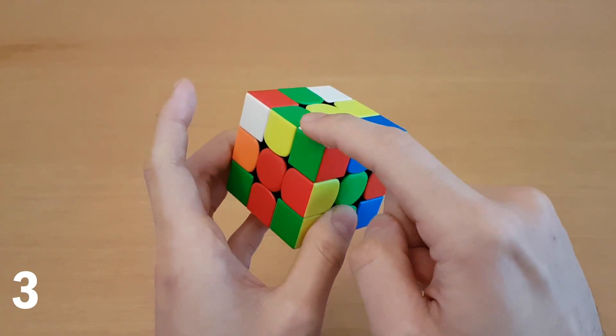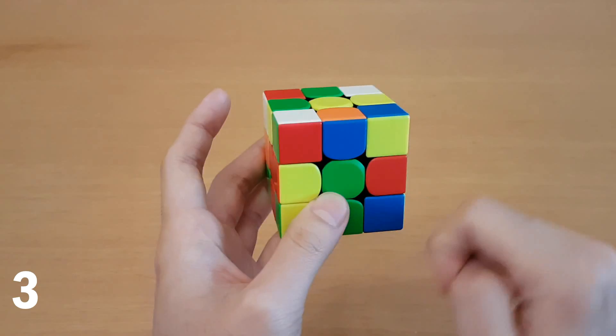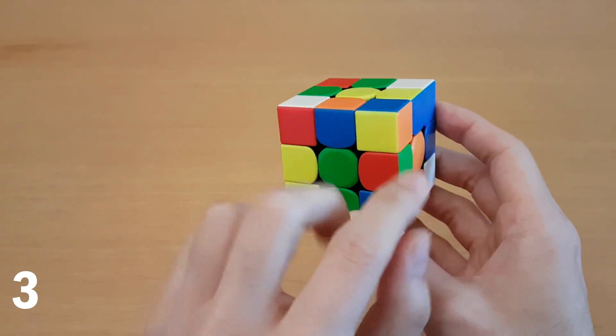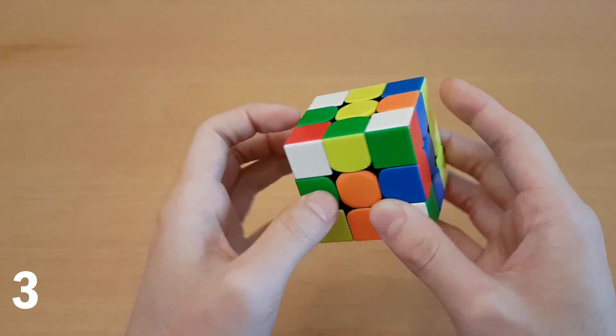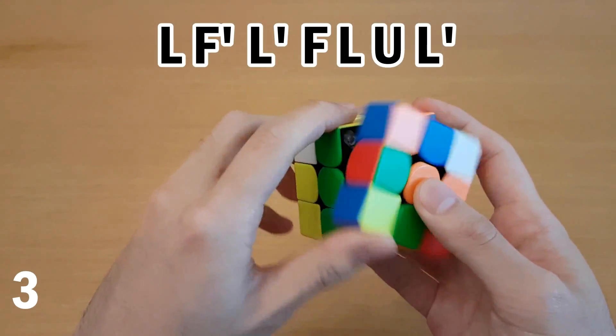Now we have this case with white on top, and the edge next to the slot, but flipped. This is the case when the slot and the piece are both on front. Now if the piece was on the front and the slot was at the back, make sure you know that you have to do sledgehammer here.